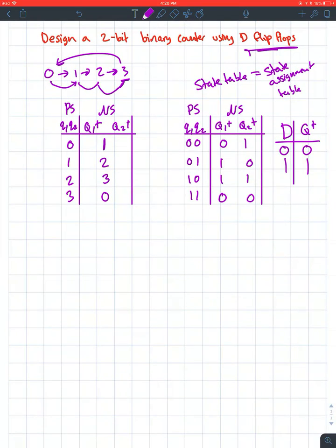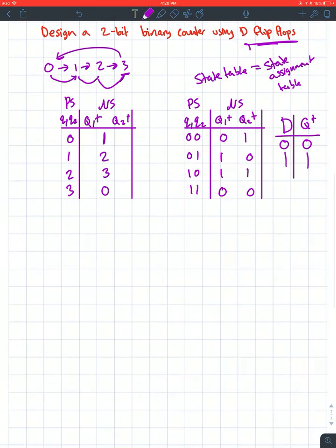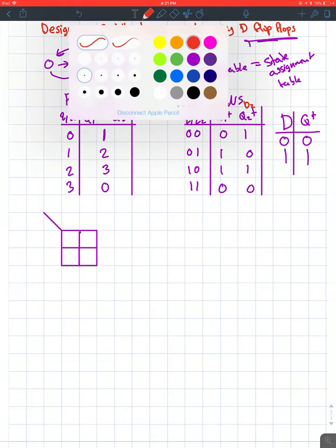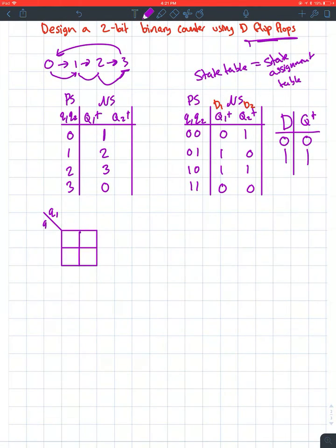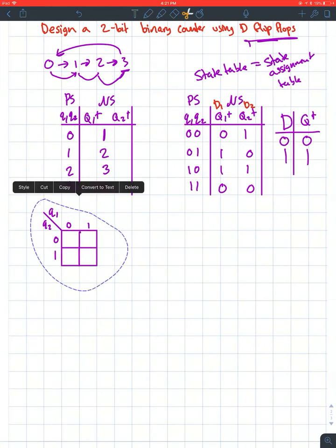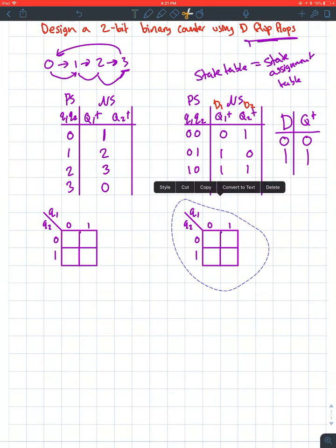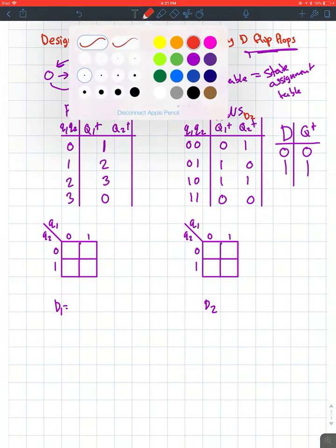Now you need equations to design your D flip-flop. If you can't tell from the table what your equations are, use K-maps. This will be a 2x2 K-map because we're using two bits. You need a K-map for each equation—this is my D1, this is my D2. We need two K-maps with Q1 and Q2 as 0, 1, 0, 1.